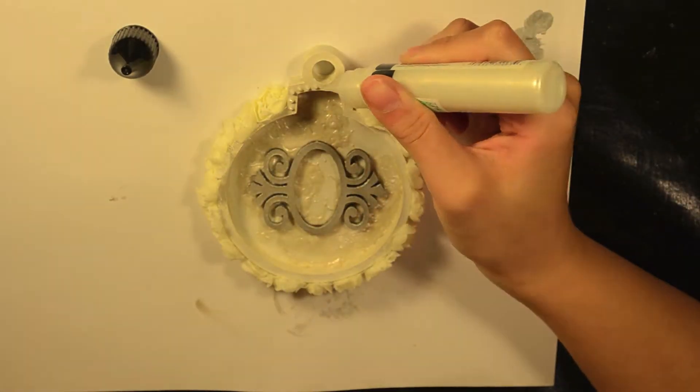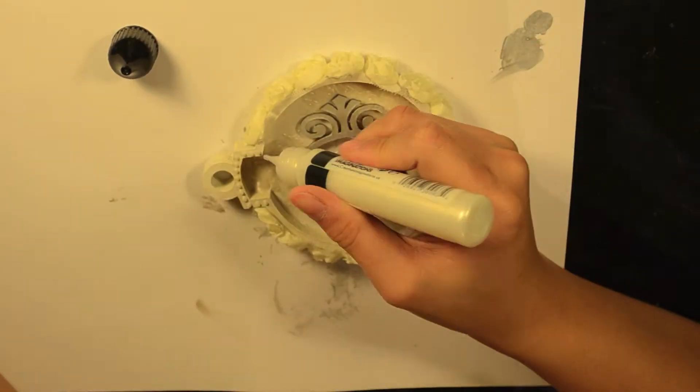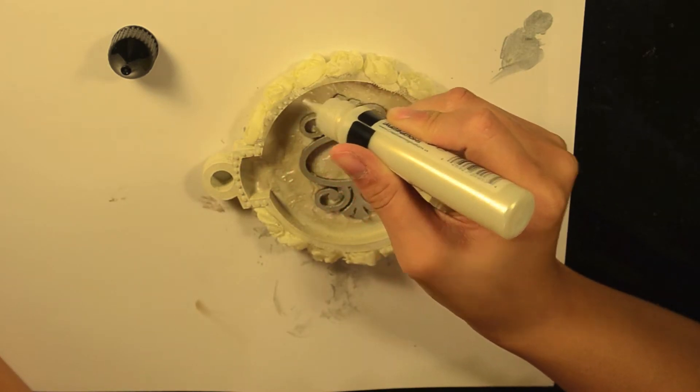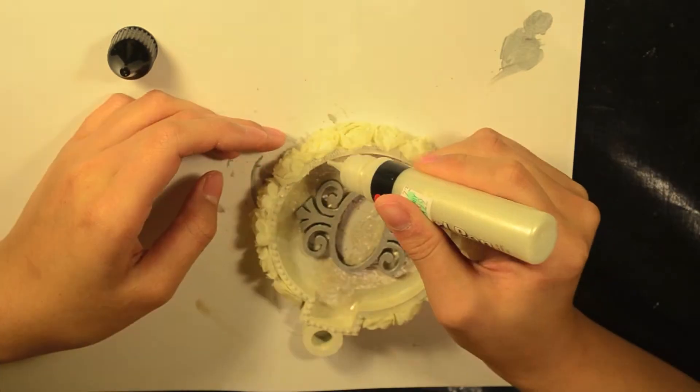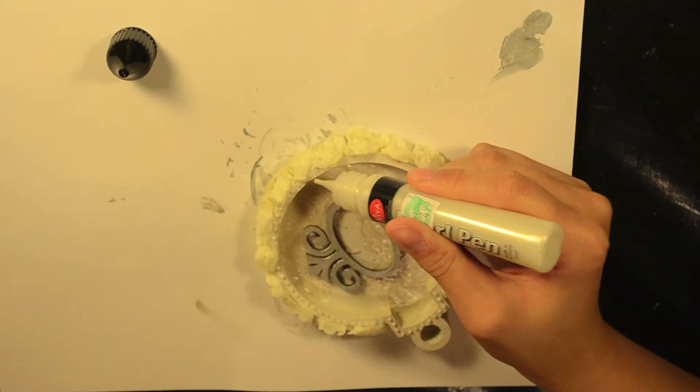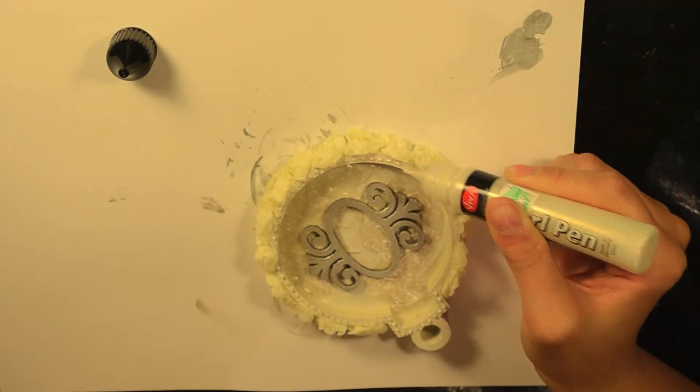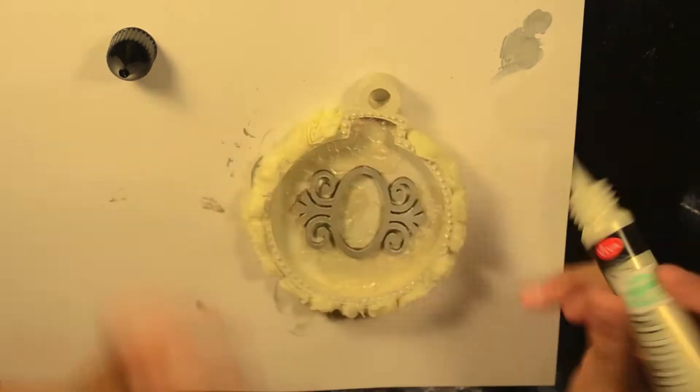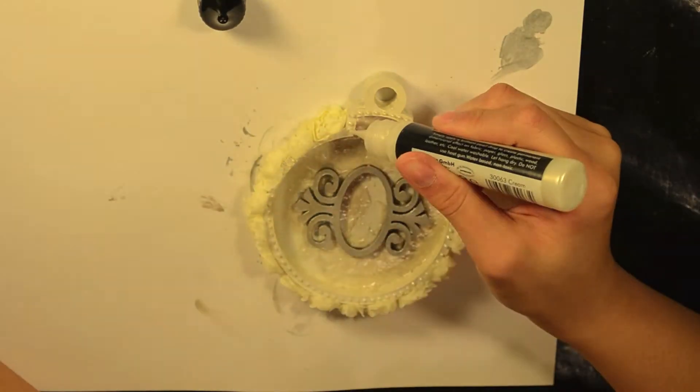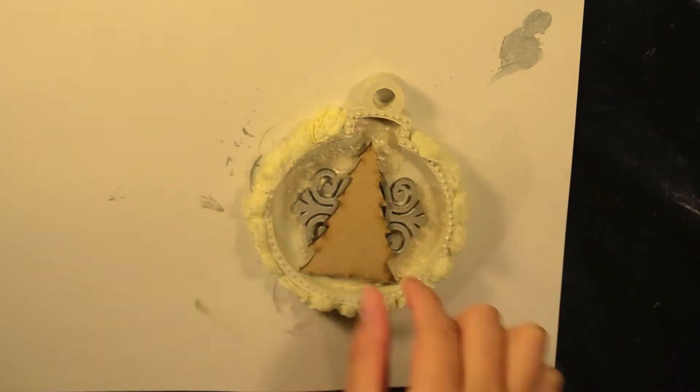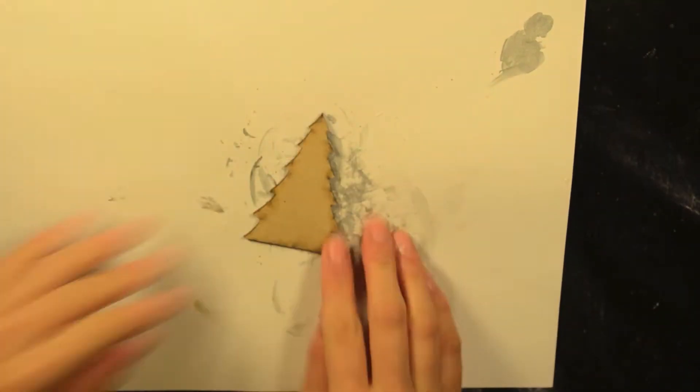Now I'm using a Viva Decor pearl pen, which is like liquid pearl, and making little pearl dots all over the edges of the shadow box, which I think is more decorative than the plain edges. You can do it or you don't have to. It's your choice, but I like the look. I like my Christmas ornament to be blingy.